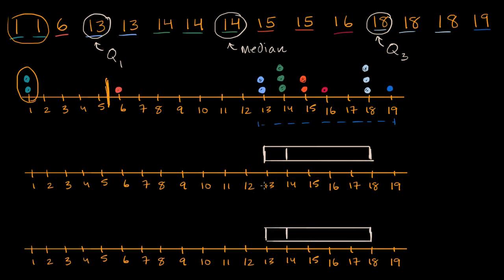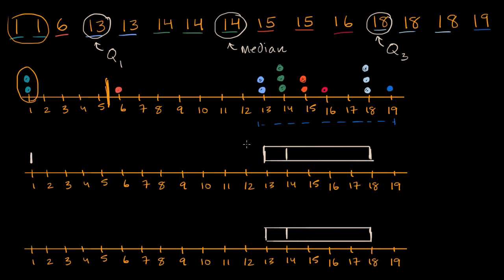Now if we don't want to consider outliers, we would say: what's the entire range here? We have things that go from one all the way to 19. So one way to do it is we start at one, and our entire range goes all the way from one to 19, including even these two outliers.